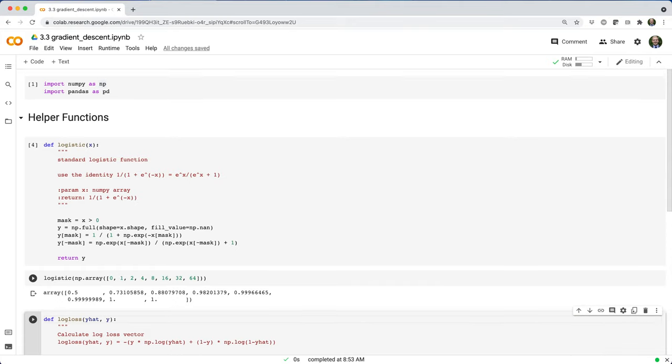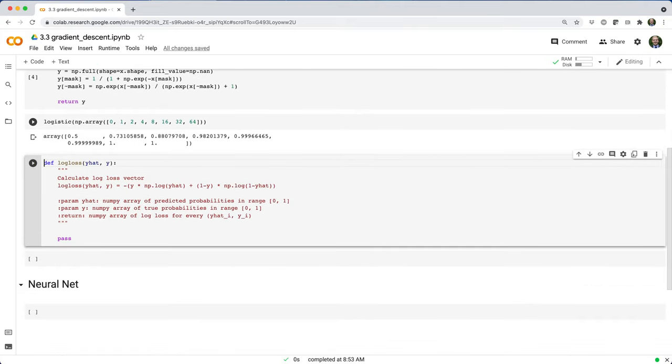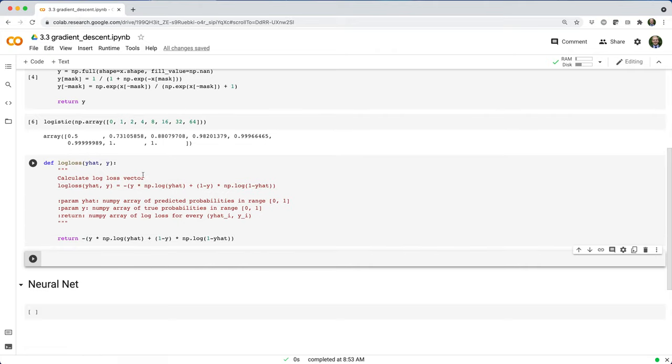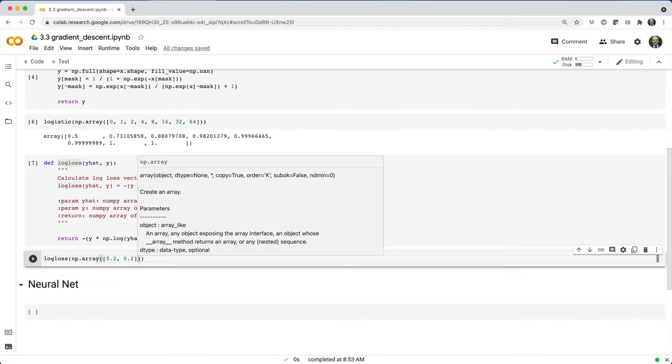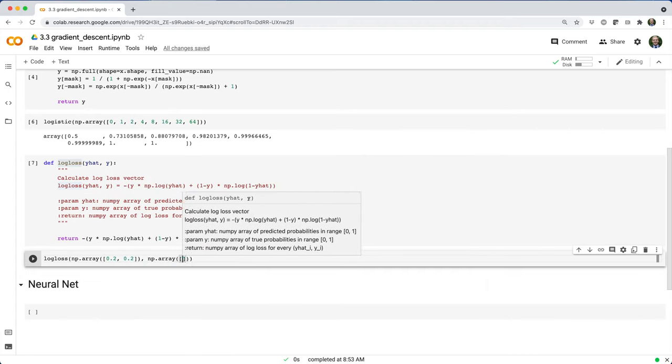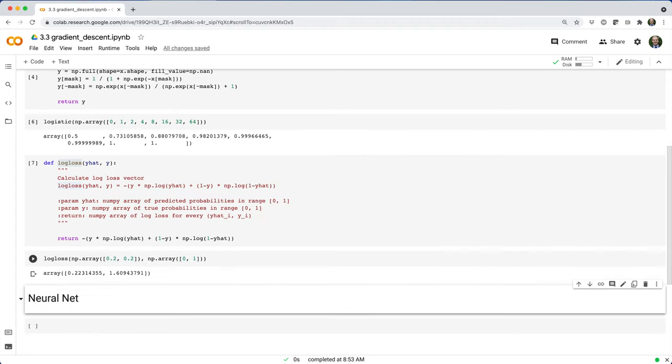Next, we'll implement a log loss function that inputs two one-dimensional numpy arrays, y hat and y, and outputs a third one-dimensional numpy array with the sample or case log loss values. So, with these helper functions in place, see if you can code up a neural network that learns to identify checkerboards in the simple images dataset.